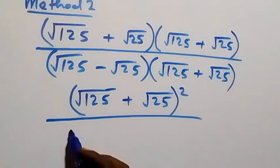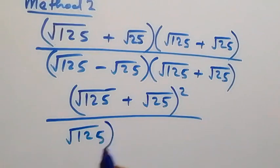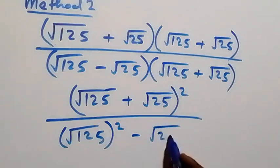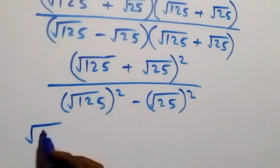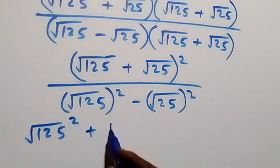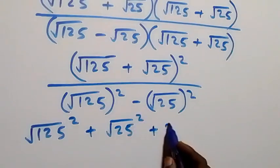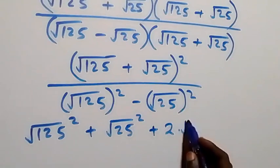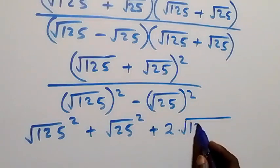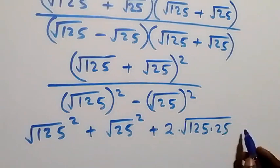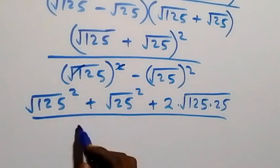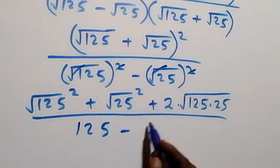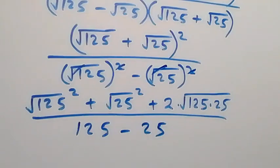This gives us (root 125 plus root 25) squared in the numerator, divided by root 125 squared minus root 25 squared in the denominator. Expanding the numerator: root 125 squared plus root 25 squared plus 2 times root 125 times root 25. In the denominator, the square cancels the square root, giving 125 minus 25.